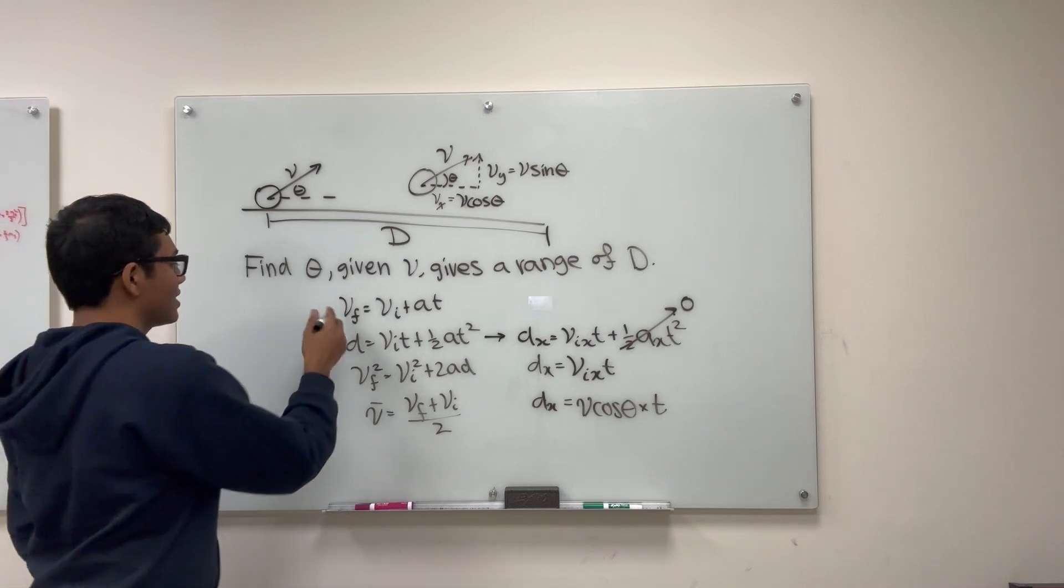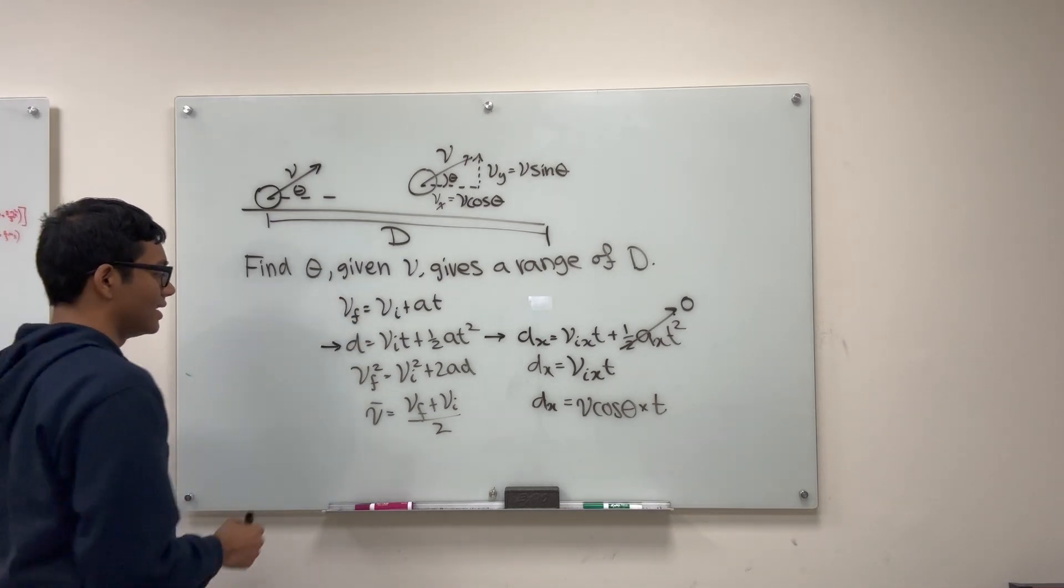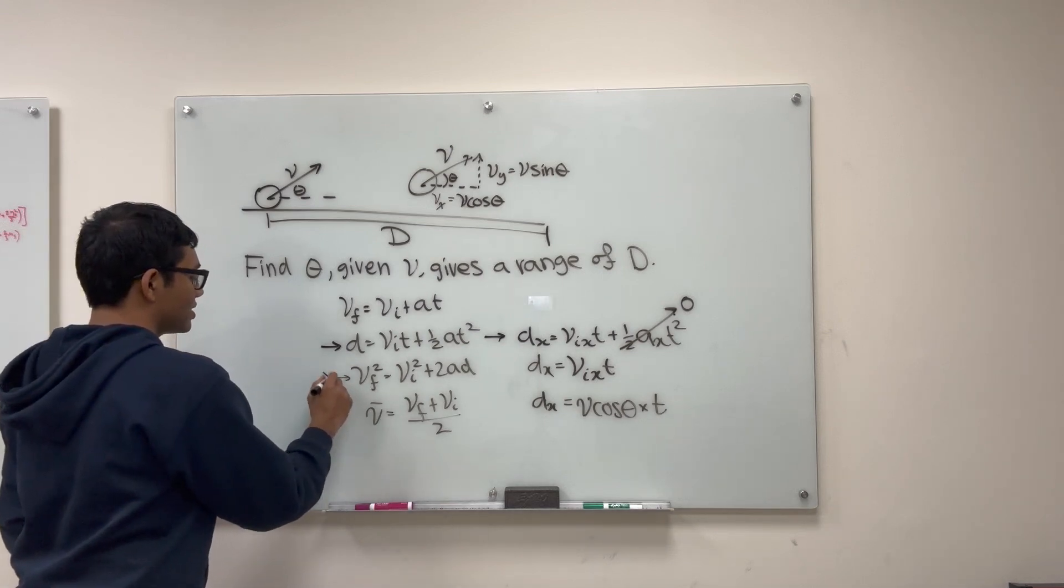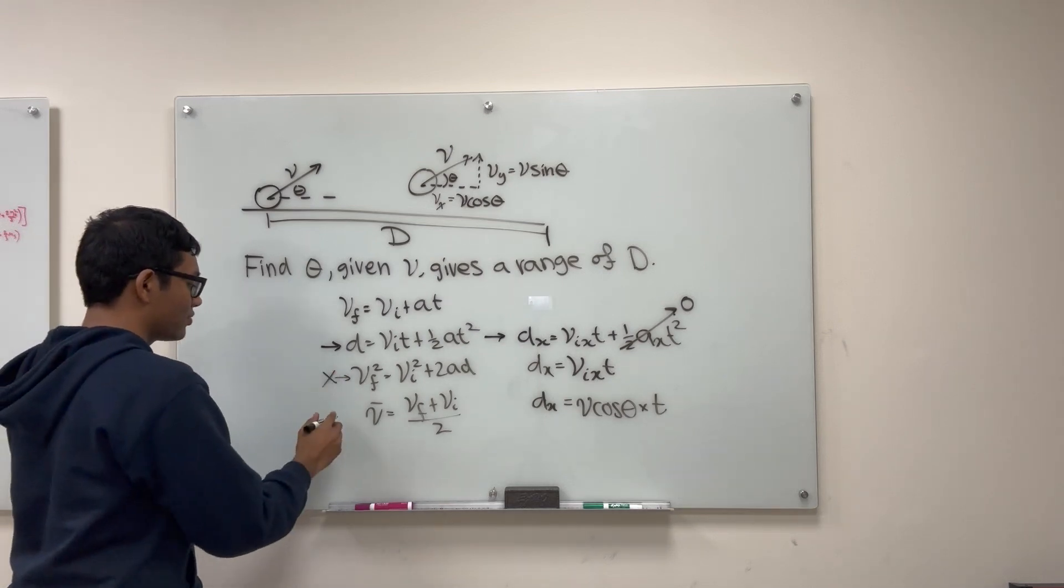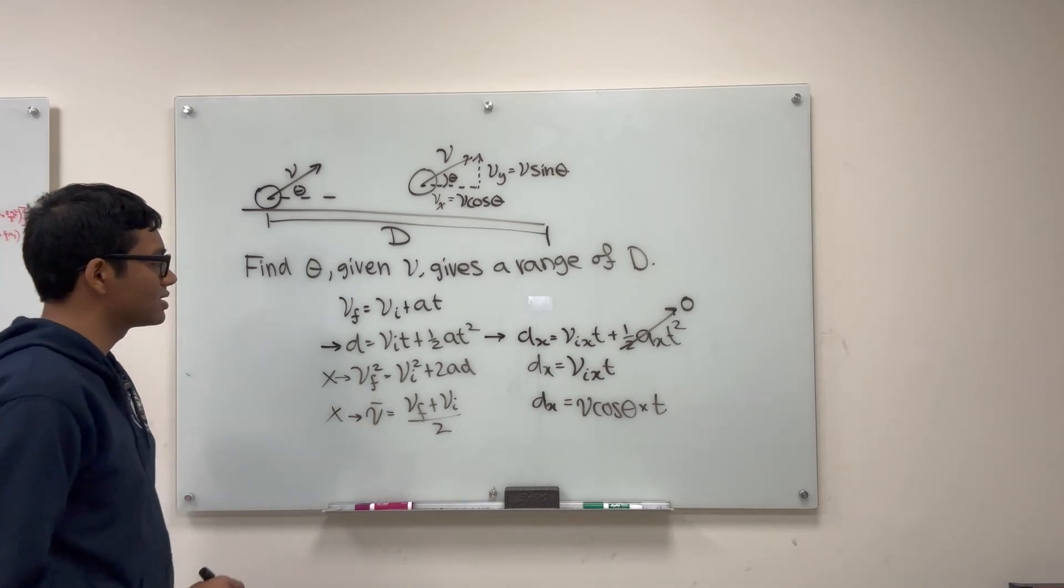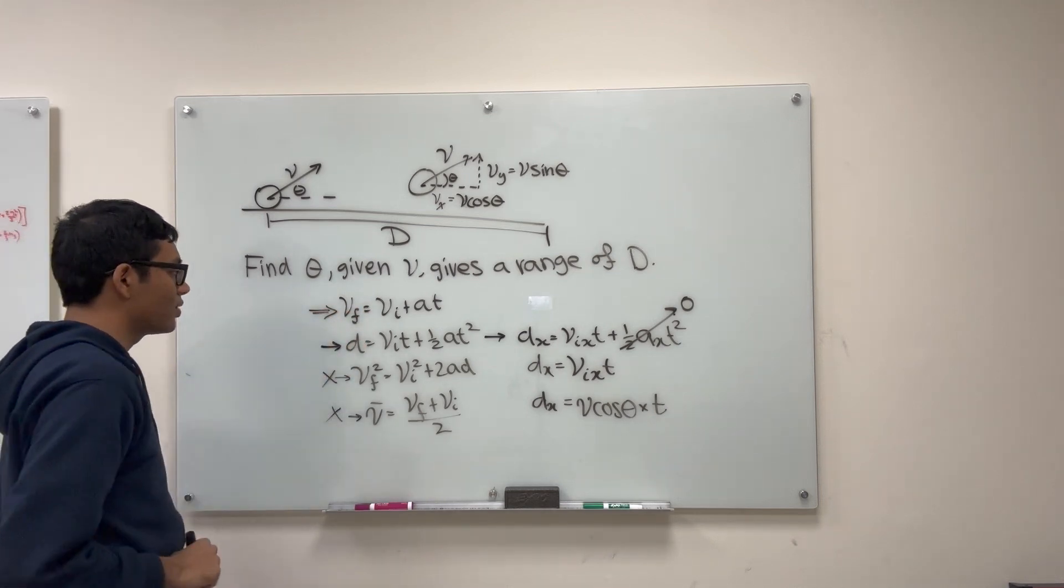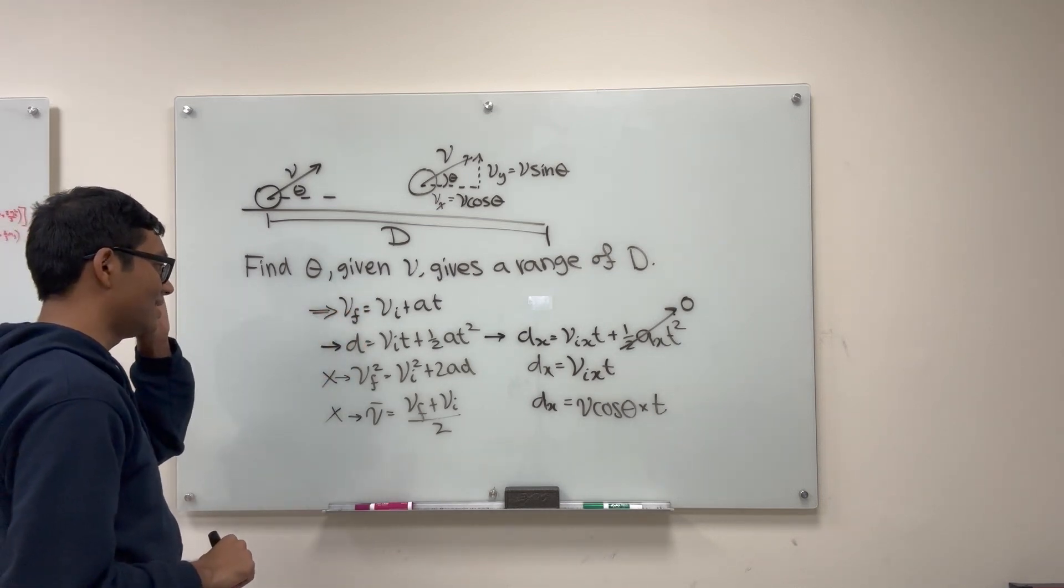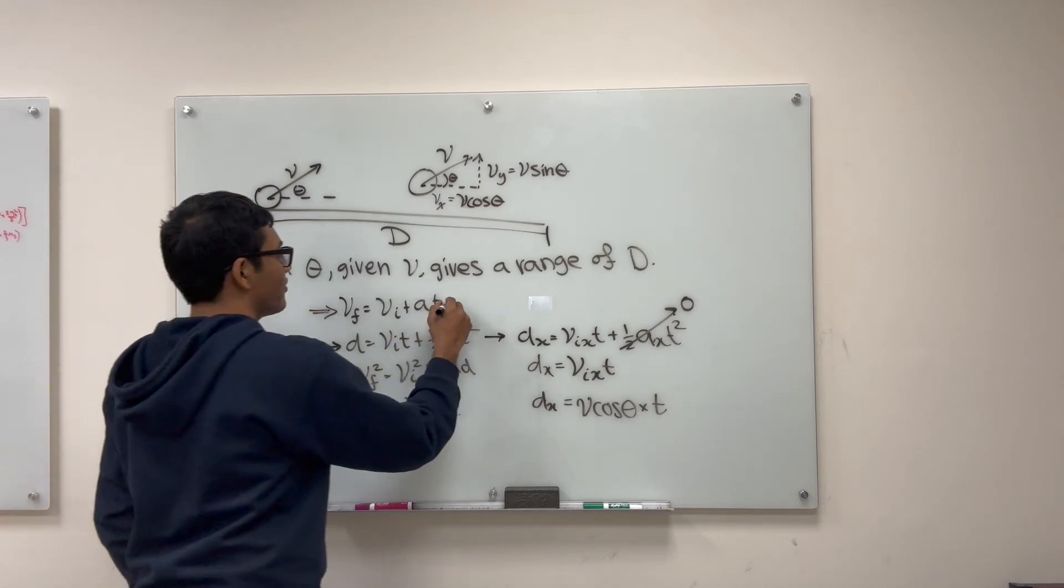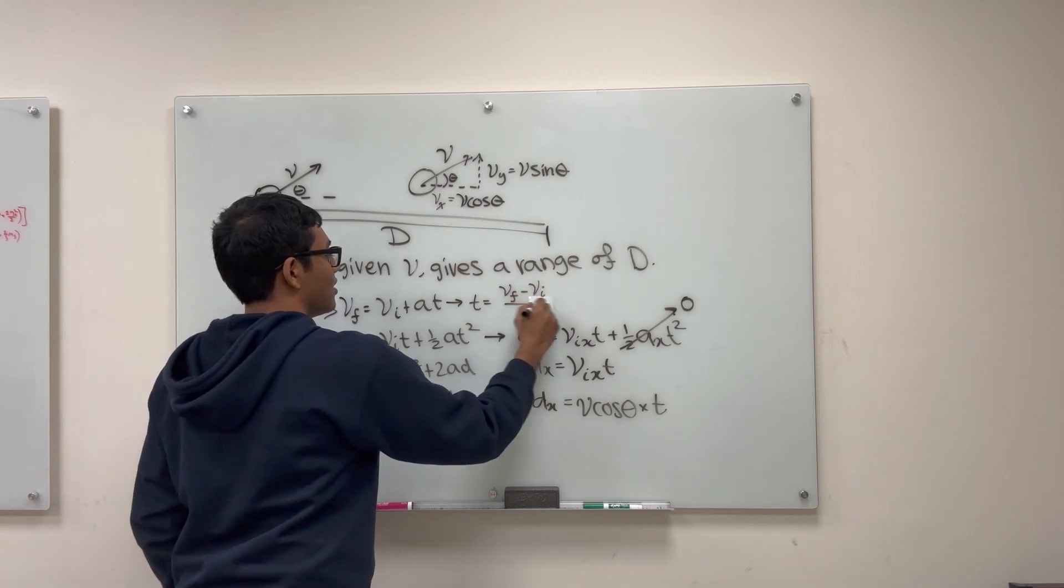To find t, we can look at some of the other kinematics equations. So let's see which equation has t. Certainly this third equation does not have t in it, so this one is not relevant. This last equation for the average velocity also does not have time. Looks like the only equation that involves time other than the second one is vf is vi plus at. So now if I go ahead and solve for time here, what do I get? I get vf minus vi over a.